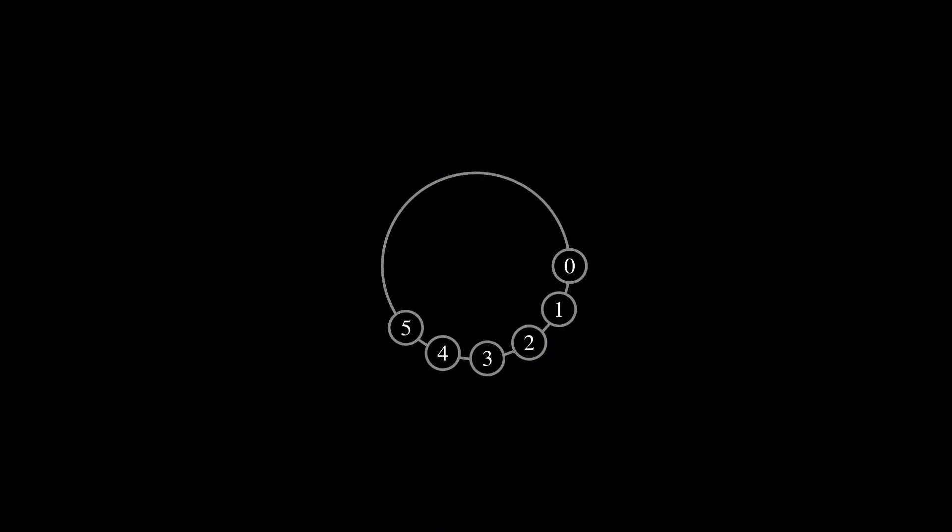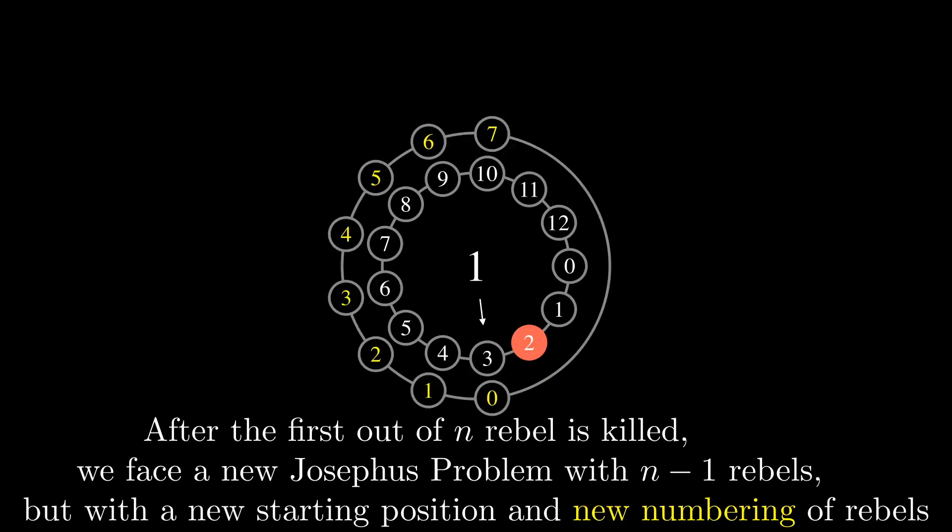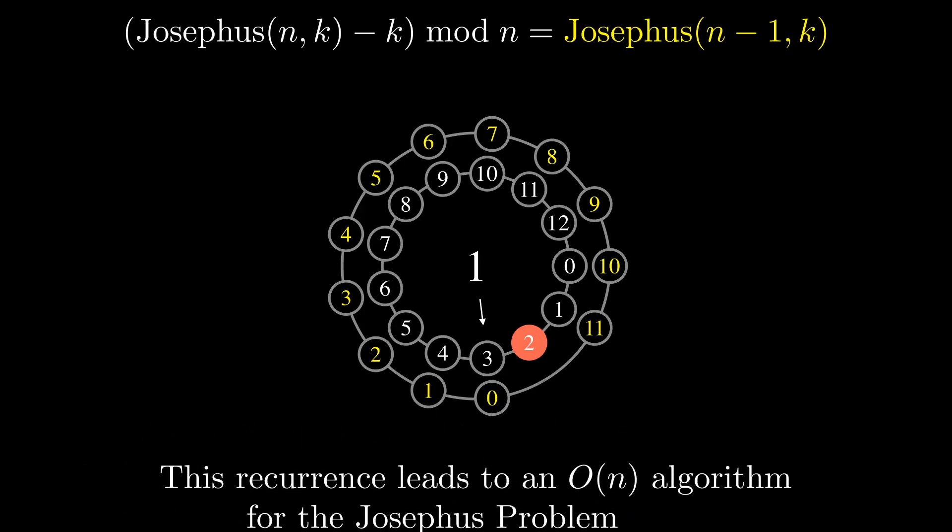After the first rebel at position k-1 is killed, we have to solve a smaller problem with n-1 rebels. But the numbering of rebels has now changed. Rebel k is now rebel 0, rebel k plus 1 is now rebel 1, and so on. Here is the formula for transforming old numbers into new numbers for the case k equal to 3, and the same formula for an arbitrary k. This formula implies a recurrence for the Josephus problem that derives Josephus(n, k) from Josephus(n-1, k). This recurrence gives a linear time algorithm for the Josephus problem.